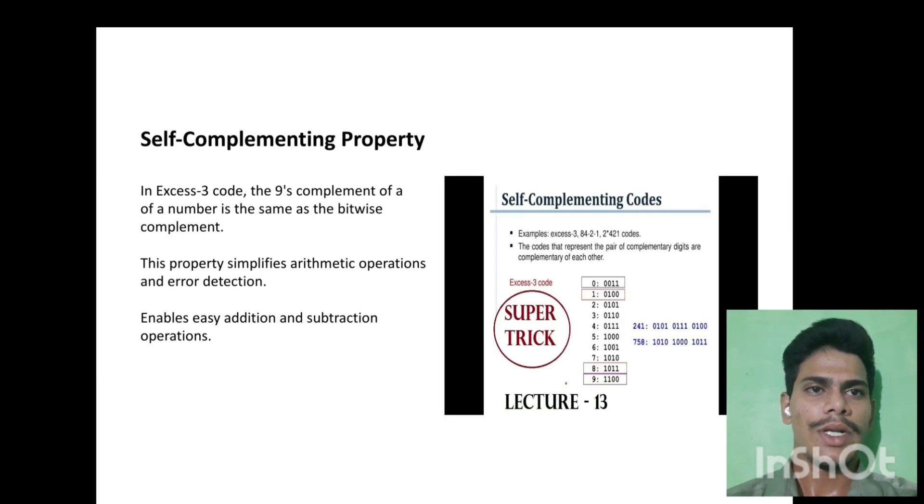In XS3 code, self-complementing property. In XS3 code, the 9's complement of a number is the same as the bitwise complement. This property simplifies arithmetic operations and error detection. Enables easy addition and subtraction operations. We see the complementary code.